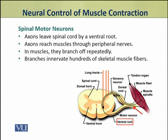In muscles, the axons branch off repeatedly. These branches innervate the skeletal muscle fibers.